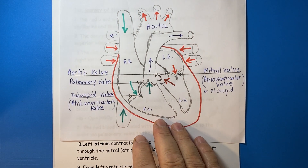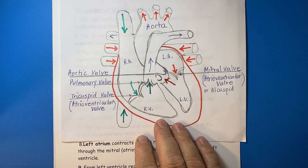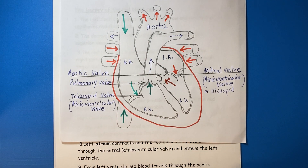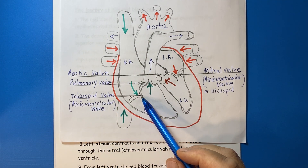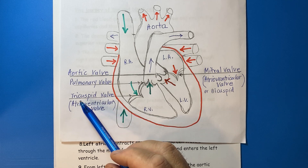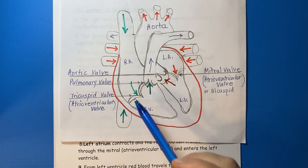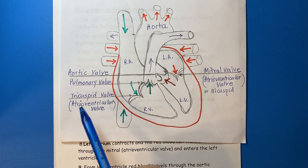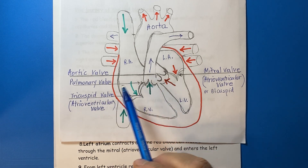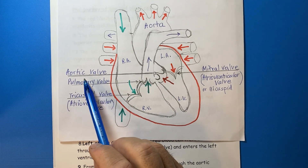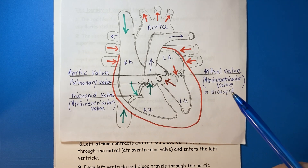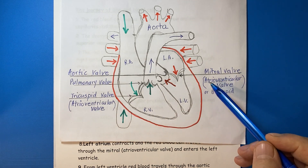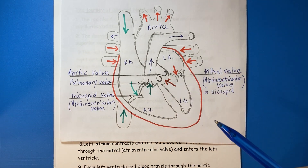There are four valves of the heart: the atrioventricular valve or tricuspid valve, the pulmonary valve, the aortic valve, and the mitral valve.